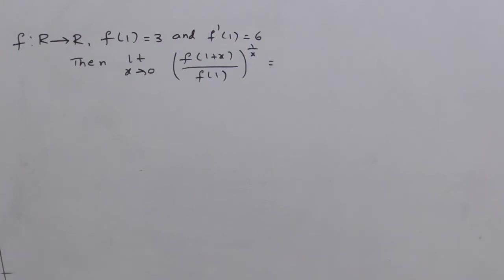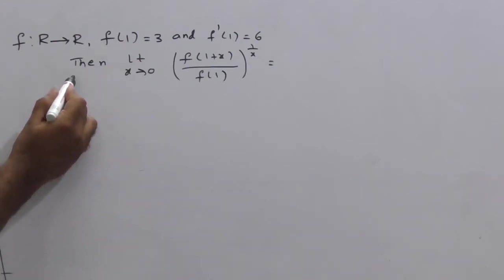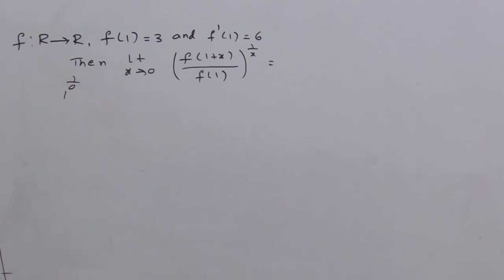So this is calculus limit based equation. Observe here, by substituting x tends to 0, so this gives f(1) by f(1) that is equal to 1 and here the power is 1 by 0. By substituting direct limit, here you are getting 1 power 1 by 0 form, which is indeterminate form.